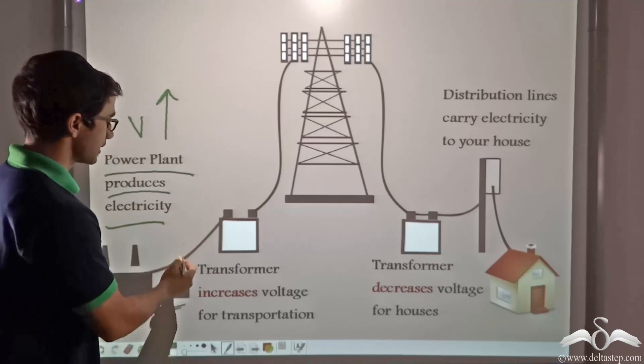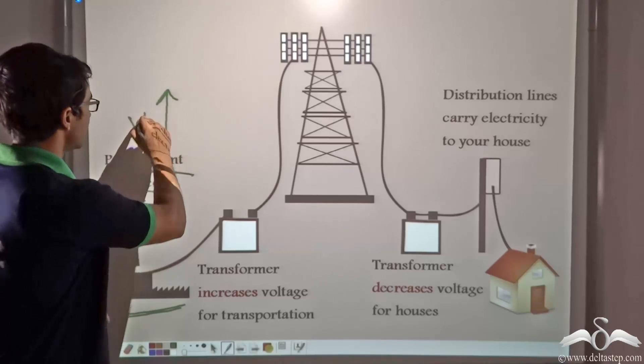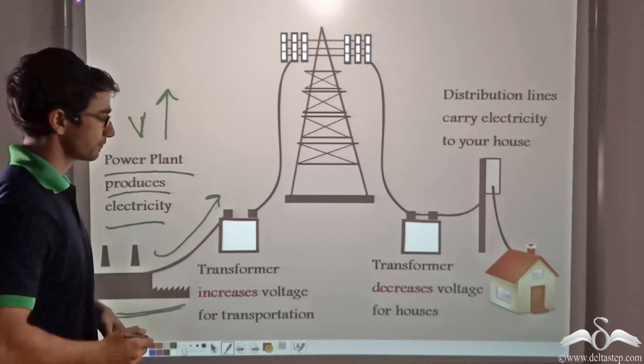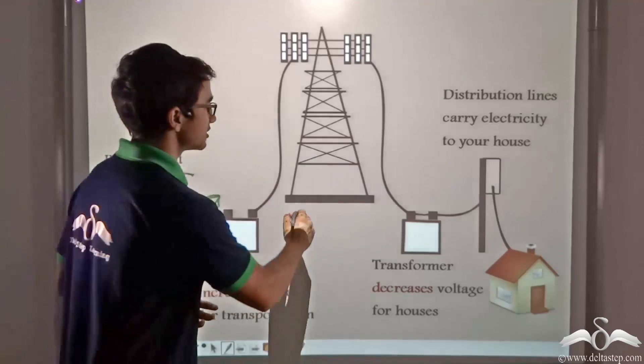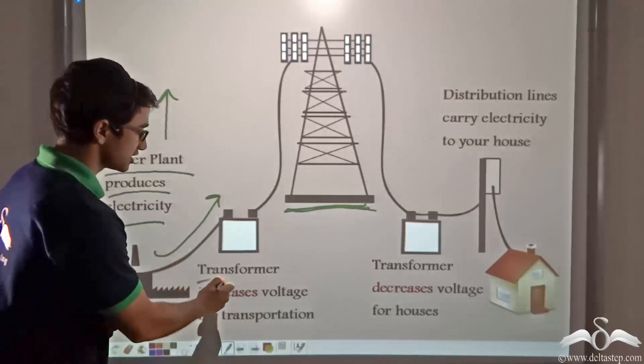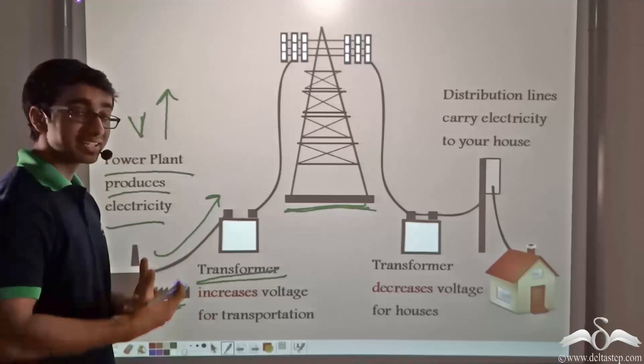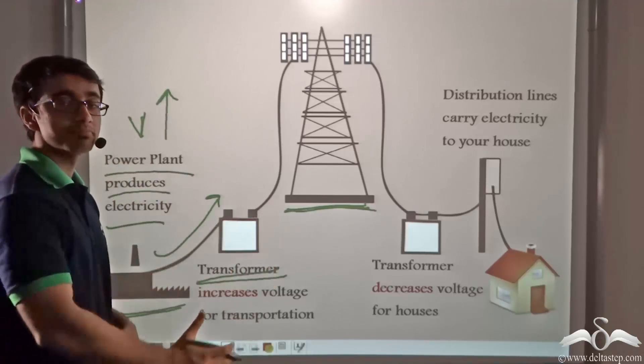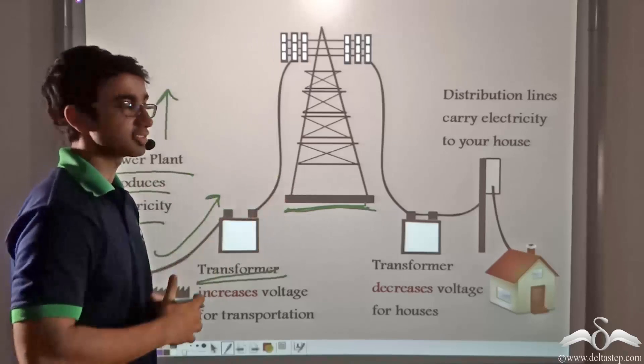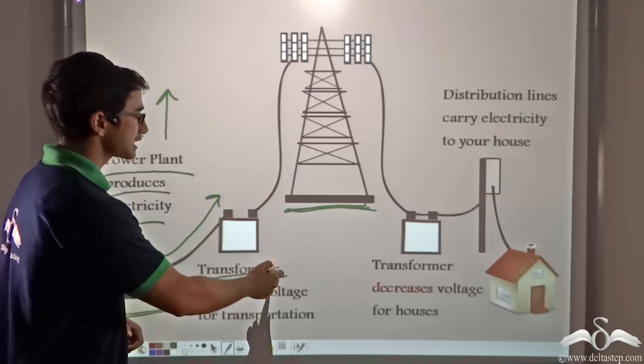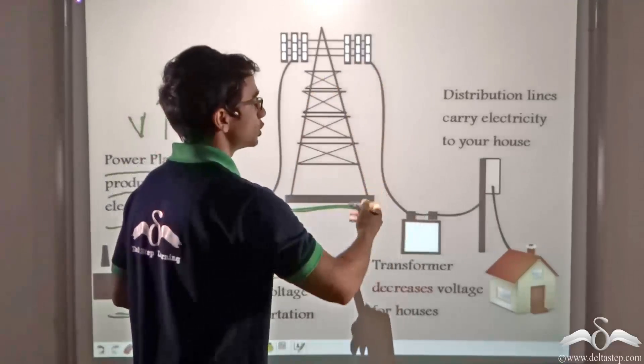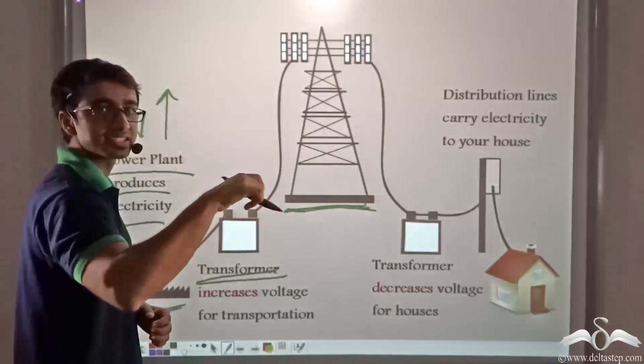So now this voltage, at this voltage, the current is generated and it travels along the wires. So before it encounters this distribution center, it encounters this transformer which increases the voltage for transportation because it has to travel a long distance. So after this voltage has been increased to a good amount, it is distributed to several places in the city.